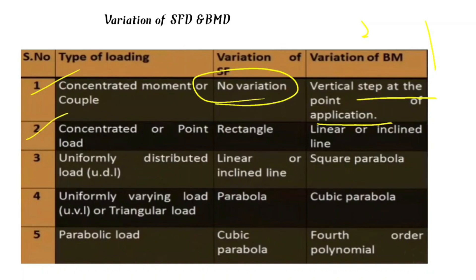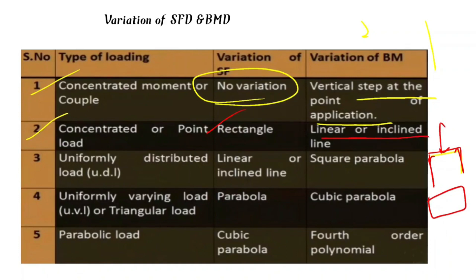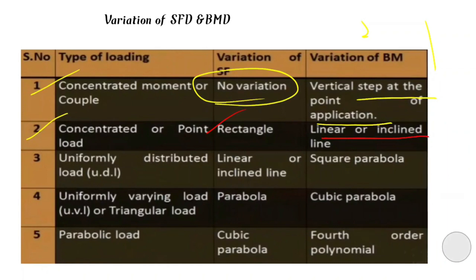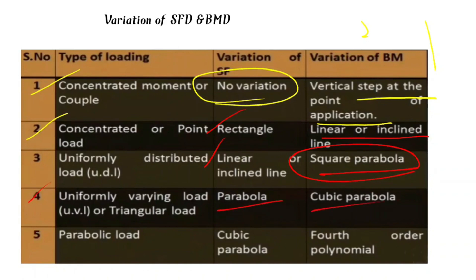For a concentrated or point load: shear force diagram is rectangular; bending moment diagram is linear (inclined line). For uniformly distributed load: shear force varies linearly (inclined line); bending moment varies as a square parabola. For uniformly varying load: shear force varies as a parabola; bending moment varies as a cubic parabola.